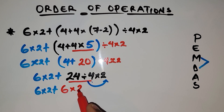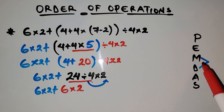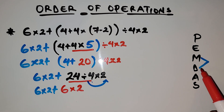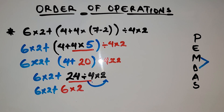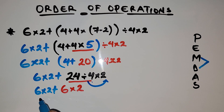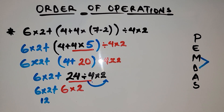Now we have multiplication. Modification and division can come before addition and subtraction. We have addition here, so we want to multiply first before we can add. So 6 times 2 gives us 12. Then 12 plus 12 — we want to solve that addition.